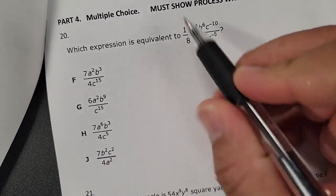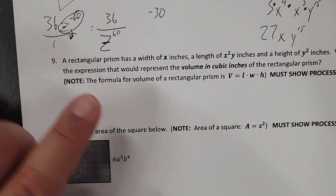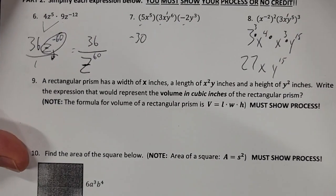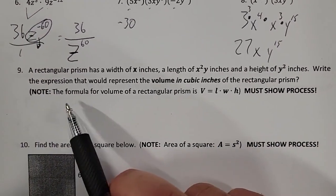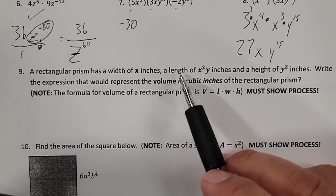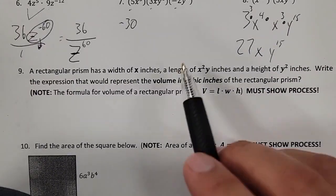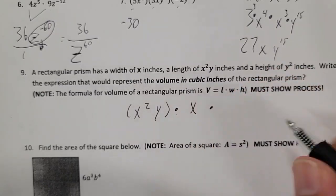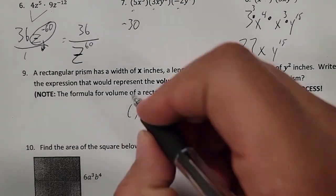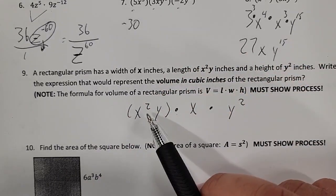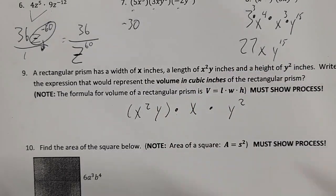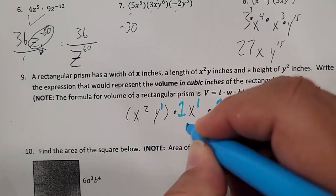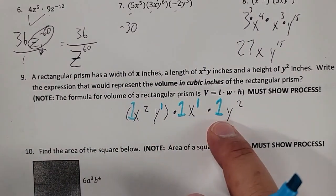Now it says: a rectangular prism with a width of X inches, a length of X squared Y inches, and a height of Y squared inches. Write the expression that represents the volume of the rectangular prism. The formula is length times width times height. So the length is X squared Y, times the width X, times the height Y squared. You can put a coefficient of 1 in front of each one. Multiply the coefficients — technically all ones — and add the exponents.